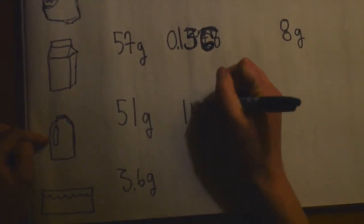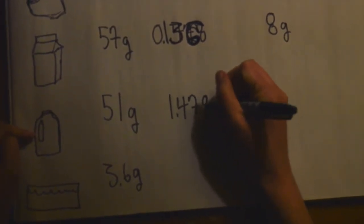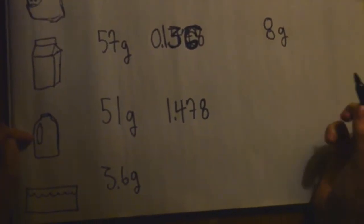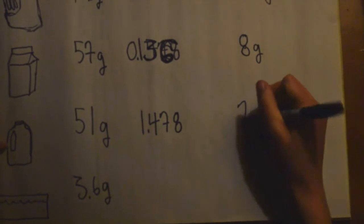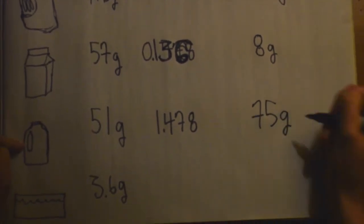For plastic, it's 1.478 grams of CO2 per gram of material, which equals 75 grams of CO2 total.